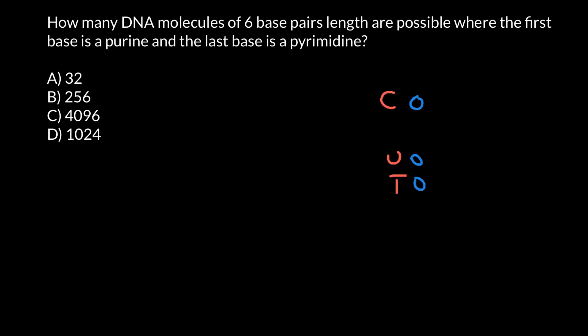And of course, you know that cytosine pairs with guanine, and thymine pairs with adenine. So now we know that the rest would have two rings.